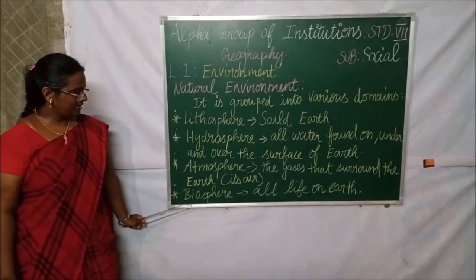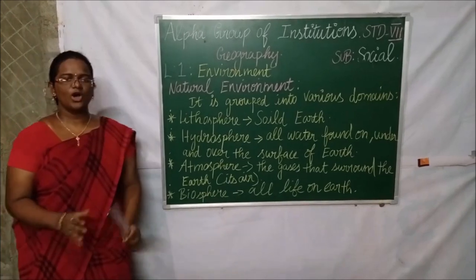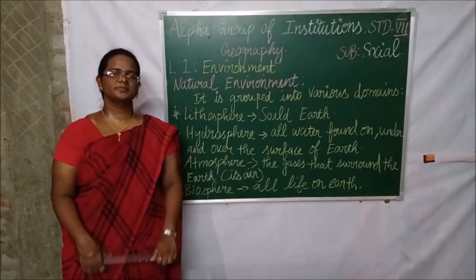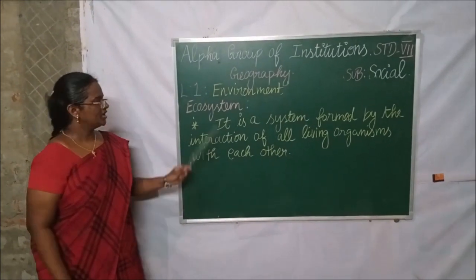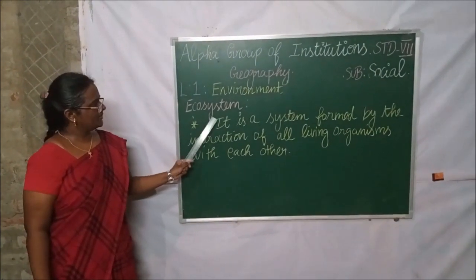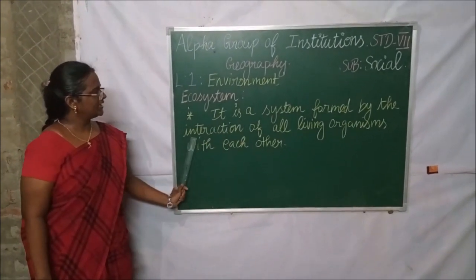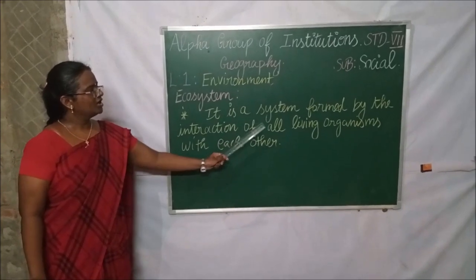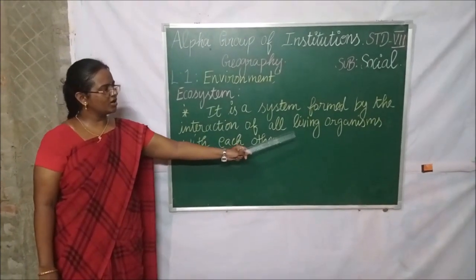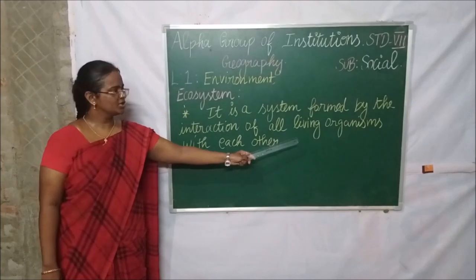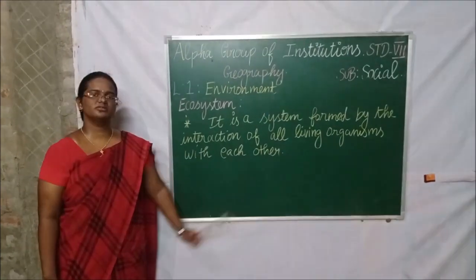Finally we have biosphere, which means all life on earth. We have also discussed about ecosystem. An ecosystem is a system formed by the interaction of all living organisms, meaning living beings, with each other.